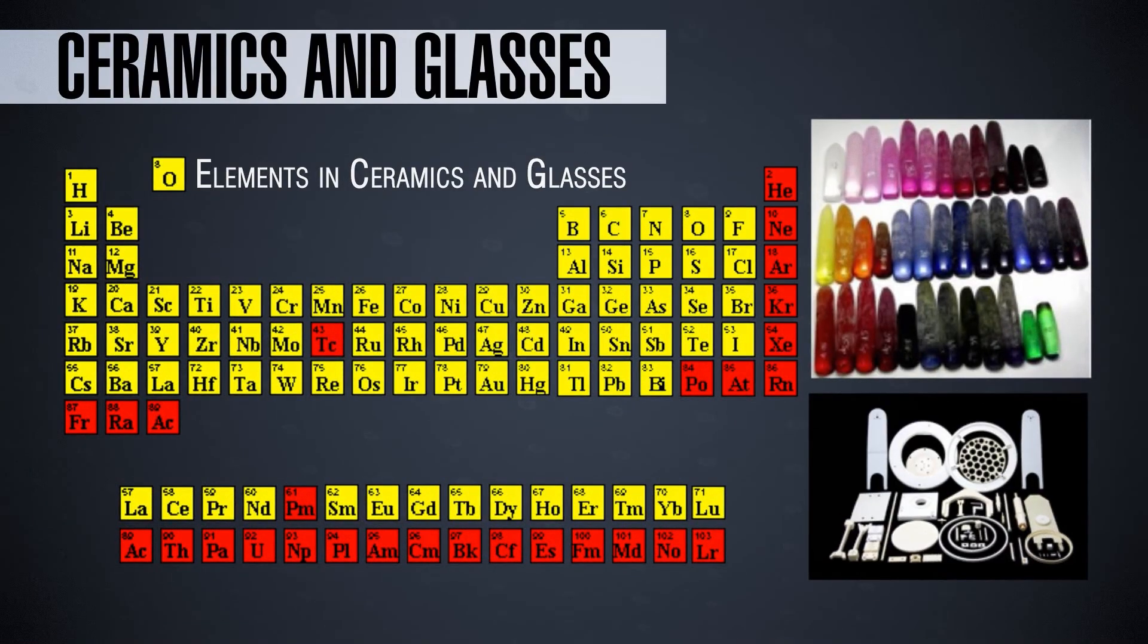Second part, the ceramics and glasses. So I have marked in yellow all the elements that are involved in the formation of the ceramics, which are basically more or less every metal plus certain non-metals that are contributing the composition of the ceramics to the final properties.